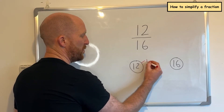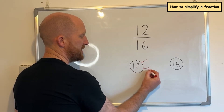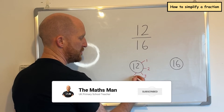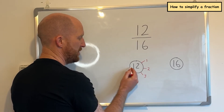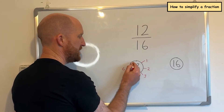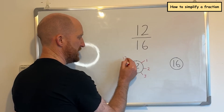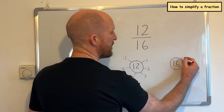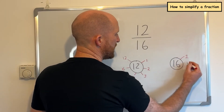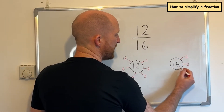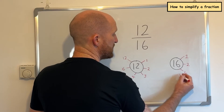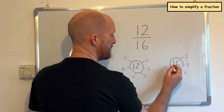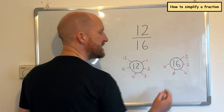12 is in the one times table, 12 is in the two times table, 12 is in the three times table, 12 is in the six times table, 12 is in the 12 times table. And I'm going to do the same for the denominator, 16. So 16 is in the one times table, it's in the two times table, it's in the four times table, it's in the eight times table, and it's in the 16 times table.